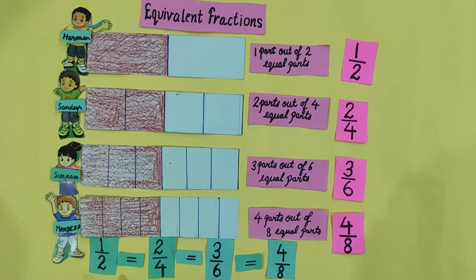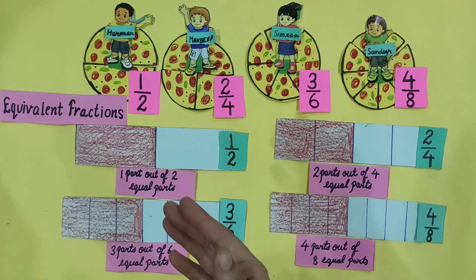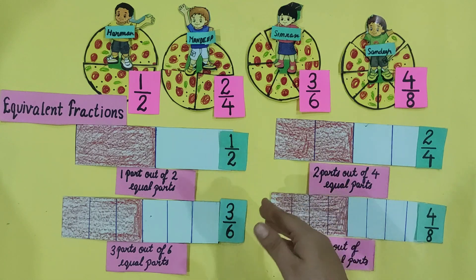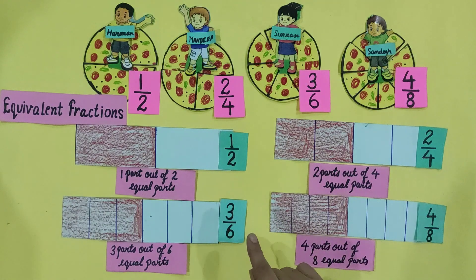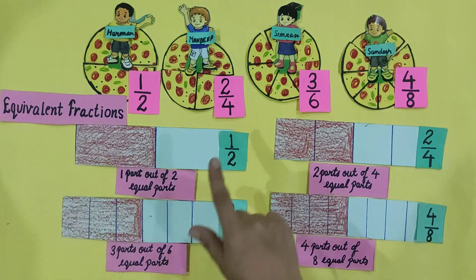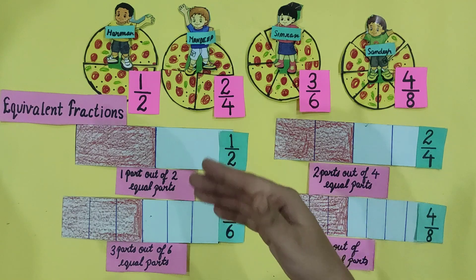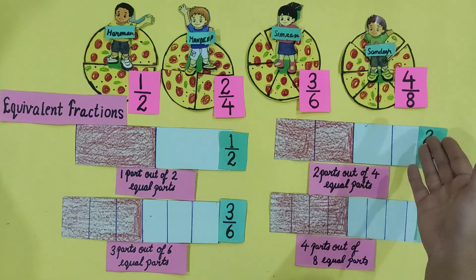We can also write these fractions as 1 by 2 is equal to 2 by 4 is equal to 3 by 6 is equal to 4 by 8. Students, we discussed equivalent fractions using different methods, and you have learnt that different fractions which describe the same part of the whole are known as equivalent fractions. 1 by 2, 2 by 4, 3 by 6, and 4 by 8 describe the same part of the whole, so these are equivalent fractions.